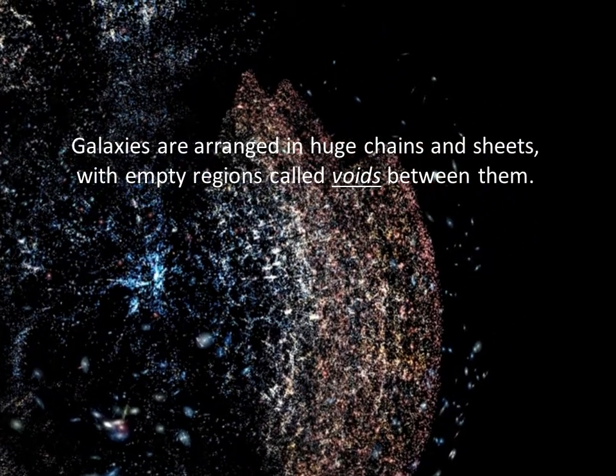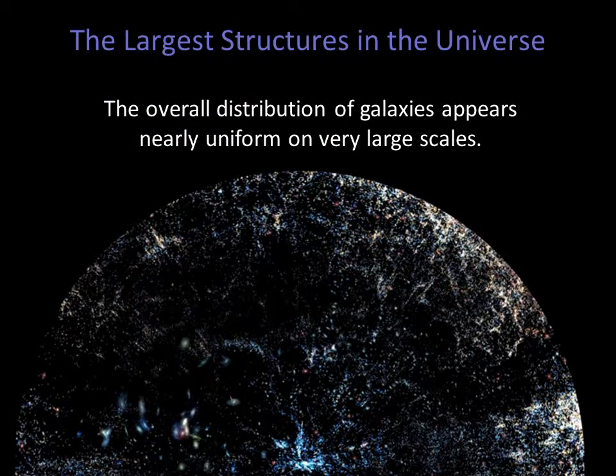The maps show that galaxies are not scattered randomly through space, but are instead arranged in huge chains and sheets that span many millions of light years. Clusters of galaxies are located at the intersections of these chains. Between these chains and sheets of galaxies are giant empty regions called voids. The overall distribution of galaxies appears nearly uniform on very large scales, and the structures we see appear to mirror the original distribution of dark matter in the early universe.